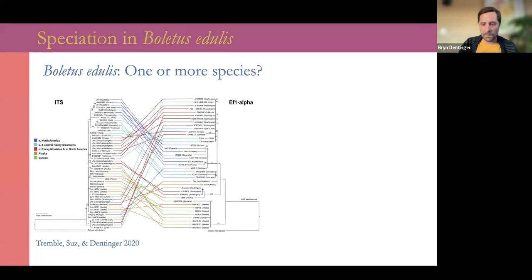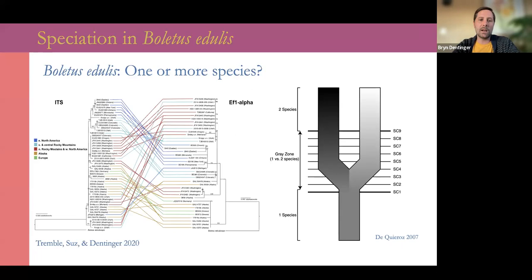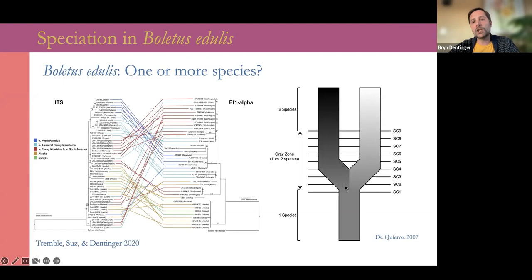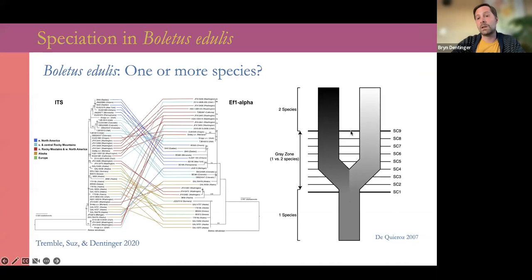What this really tells us is that Boletus edulis is somewhere in the process of either forming new species, having just formed new species, or maybe new species are coming back together and merging. This is a schematic by Kevin DeCaroz showing stages of speciation, where at the early stages two lineages are kind of leaky. This is why we're really interested in Boletus edulis — it provides the perfect model for understanding how species form in the Boletaceae, and we think it's also a good model for understanding how species form in fungi in general.